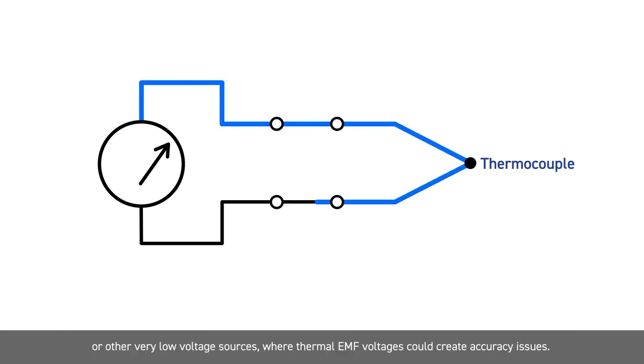This is a common technique when using Reed relays to connect to thermocouples or other very low voltage sources, where thermal EMF voltages could create accuracy issues.